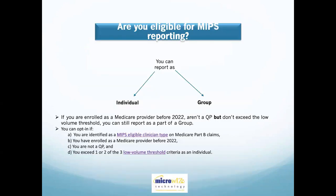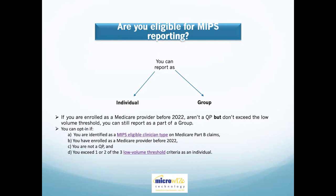If you are eligible and meet all the mentioned criteria, you can report as an individual. If you meet all the criteria except the low volume threshold, then you will be eligible to report as a group but not as an individual. If you're not eligible to report either way but want to opt in, you can do so if you meet only one or two of the low volume threshold criteria instead of all three — you can opt in to report for MIPS as an individual.